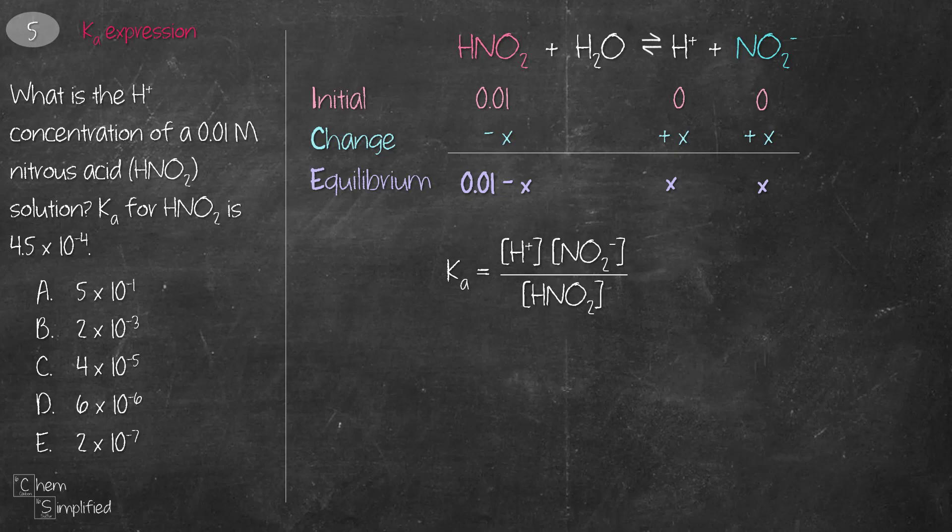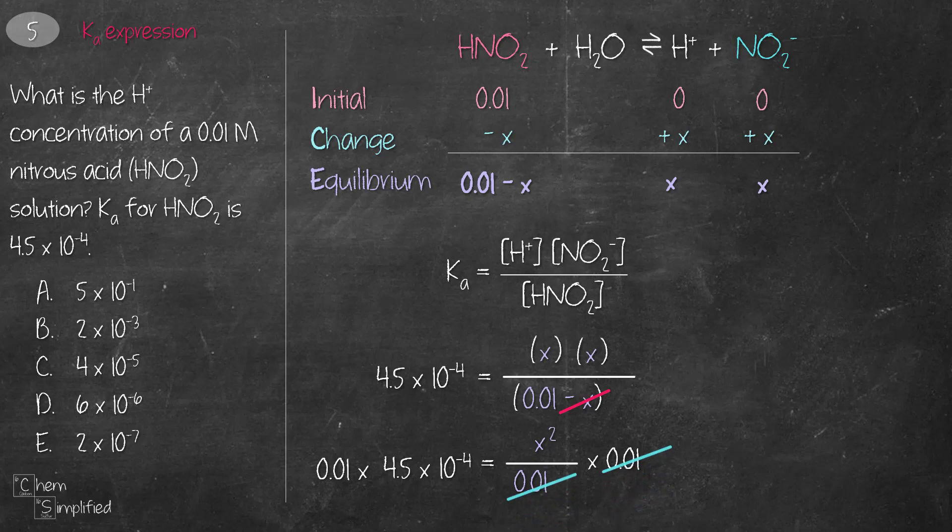Now that we have the concentrations for each term in Ka, we can go ahead and plug them in. And from the question, we're given 4.5 times 10 to the negative 4 for Ka. So we plug that in as well. Now since Ka value is so small, we can just ignore this minus X term, because it's going to be negligible when we multiply this term across. We're going to ignore this in our calculation, and that's going to simplify our calculation a lot. Let's rewrite what we have, and now we can go ahead and solve for X squared. To do that, we multiply both sides with 0.01 term, and that way we'll end up with only X squared term. And to solve for X, we're going to take a square root, and that's going to give us 2 times 10 to the negative 3, which is B as the correct answer.